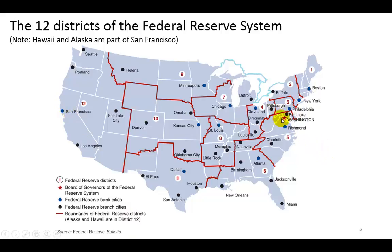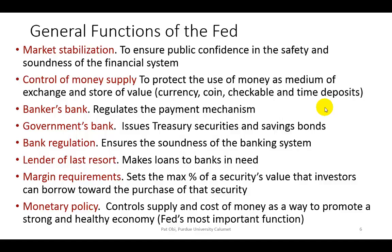The headquarters of the Federal Reserve System is Washington, D.C. New York, though, is a power broker because about a quarter of all assets are held there. The Federal Reserve Bank of New York has a permanent seat on the Board of Governors, which is the top policy-making body. The most important general function of the Fed is monetary policy — a policy that calls on the Fed to control the supply and cost of money as a way to promote a strong and healthy economy.